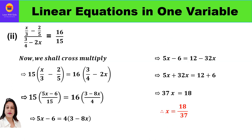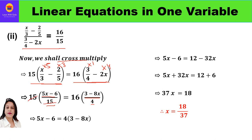Now the second question: (x/3 minus 2/5) upon (3/4 minus 2x) equals 16/15. Cross multiplying: 15 times (x/3 minus 2/5) equals 16 times (3/4 minus 2x). Simplifying the brackets: LCM of 3 and 5 is 15, giving 5x minus 6. For the right side, LCM is 4, giving (3 minus 4x)/4 times 16. The 15s cancel on the left, and 16/4 simplifies to 4, giving 5x minus 6 equals 4 times (3 minus 8x).